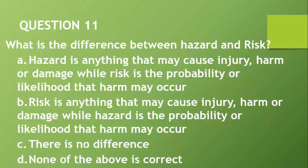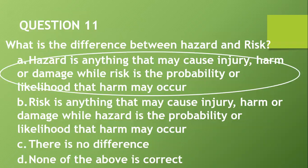Question number eleven: What is the difference between a hazard and a risk? A, a hazard is anything that may cause injury, harm, or damage, while a risk is the probability or likelihood that harm may occur. B, risk is anything that may cause injury, harm, or damage, while a hazard is the probability or likelihood that harm may occur. C, there is no difference. D, none of the above is correct. I will go with A.